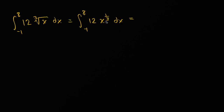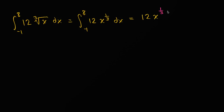Now, to take the antiderivative of this, we're going to use the power rule for integrals — essentially the reverse of the power rule for derivatives — where we increase the exponent by one and then divide by that increased exponent. So this is going to be 12 times x to the 1/3 plus one, divided by 1/3 plus one.